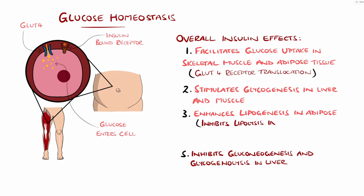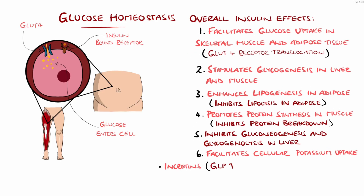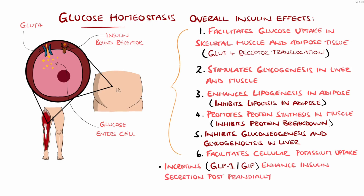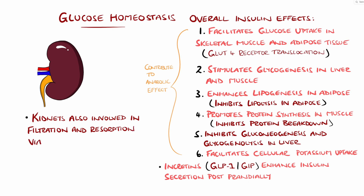Insulin also promotes protein synthesis and inhibits protein breakdown in muscle, and additionally it facilitates cellular uptake of potassium, which is why it can be used as a treatment for hyperkalemia. Incretins, such as GLP-1 and GIP, enhance insulin secretion postprandially. These actions collectively contribute to insulin's anabolic effects and regulation of metabolic balance. There is also some renal regulation, which involves filtration and reabsorption of glucose, primarily via SGLT2 transporters, as well as contributing to gluconeogenesis.